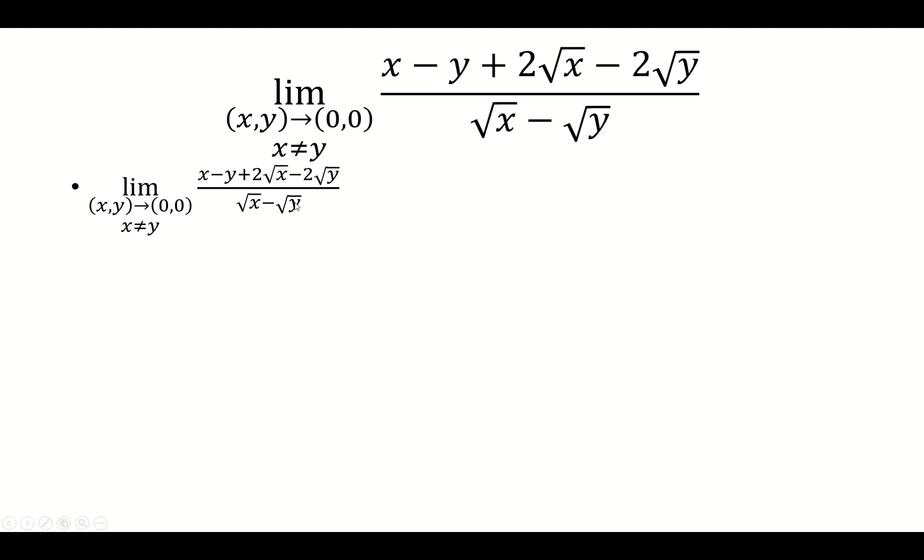So why don't we factor out the x minus y. For that one, you want to treat it as a squared minus b squared. So that's just going to be a minus b times a plus b.